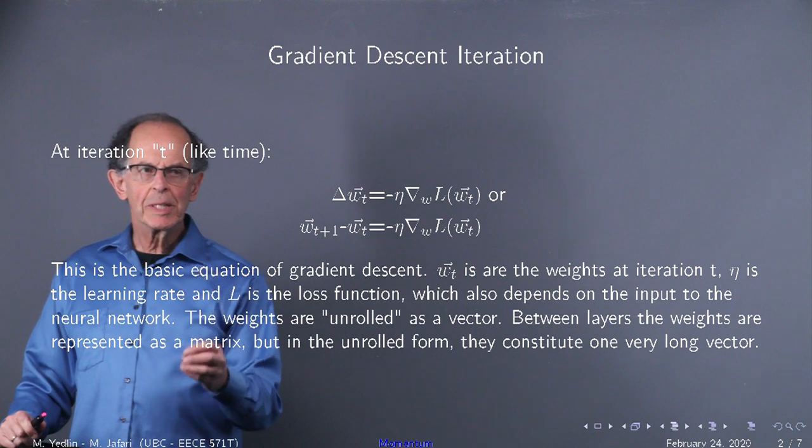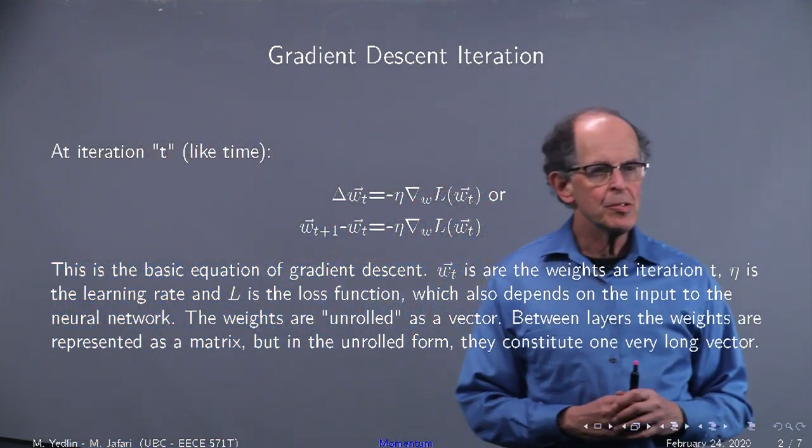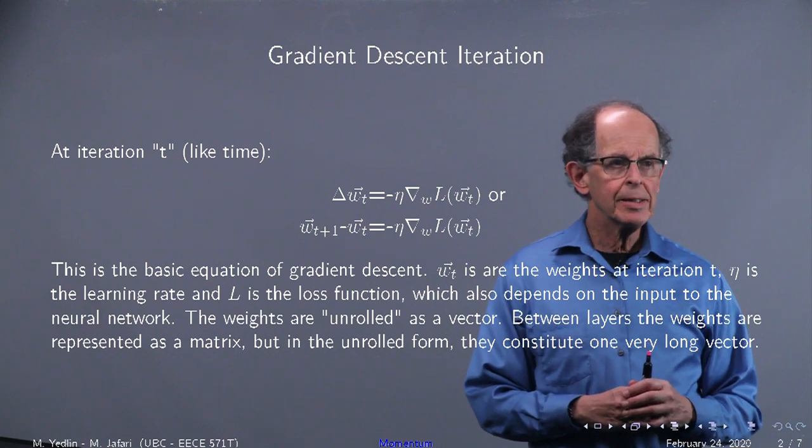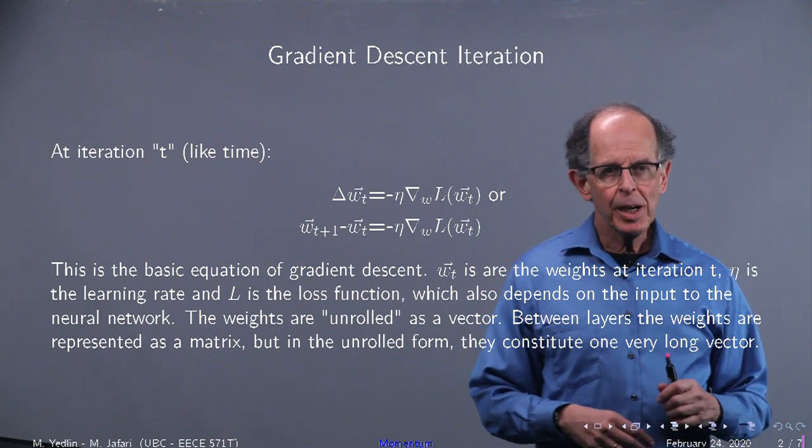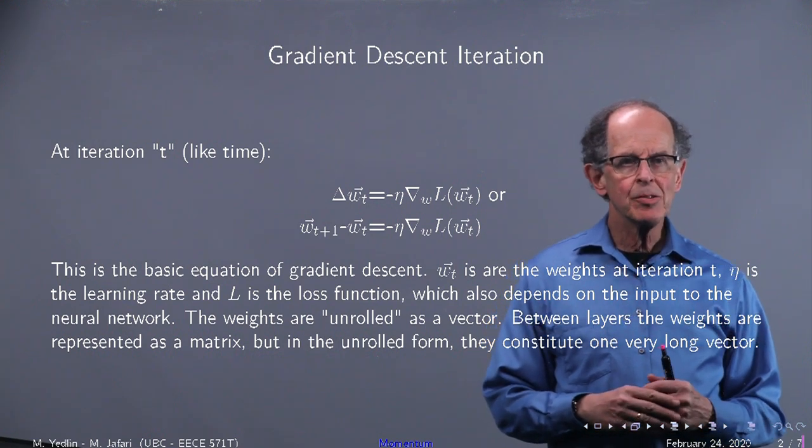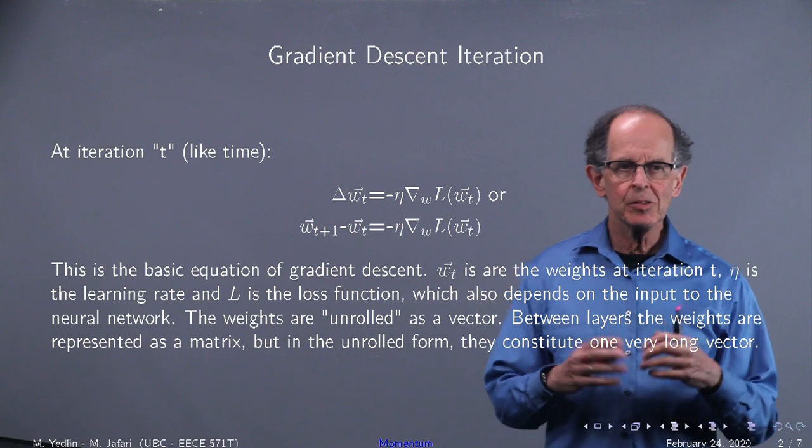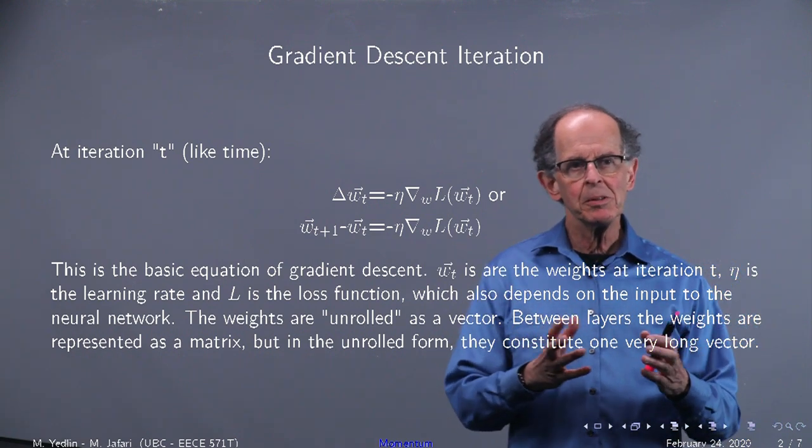Our basic gradient descent iteration is shown here. You can see it in the center of the slide. We have the change in the weights is equal to minus eta times the gradient of the loss function, the gradient taken with respect to w.